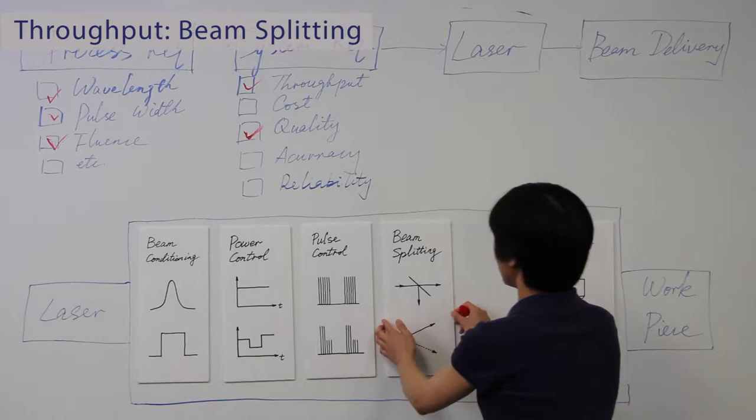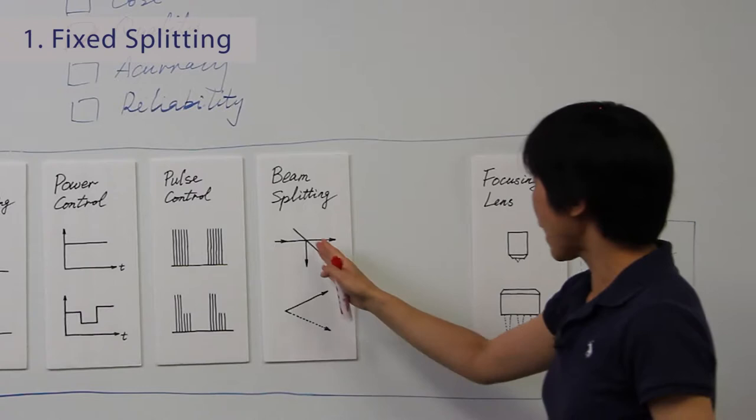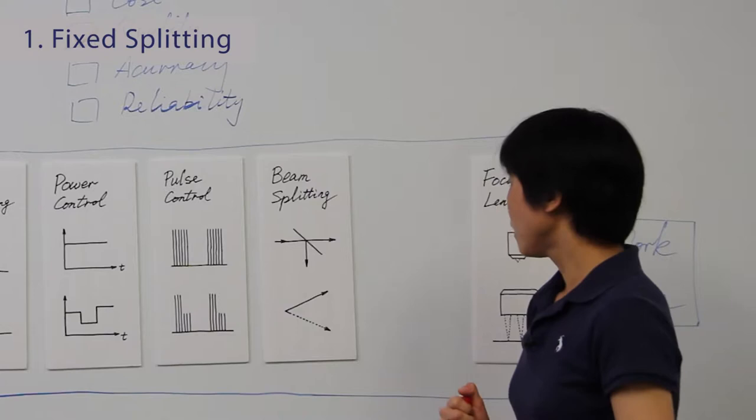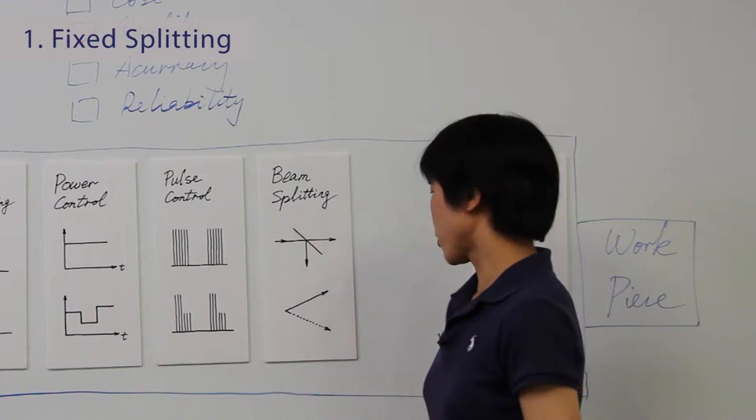So there are two ways. One, you can do fixed splitting. Basically, the input power is shared, distributed to different optical paths. This will allow us to implement multi-beam or multi-head system architecture.